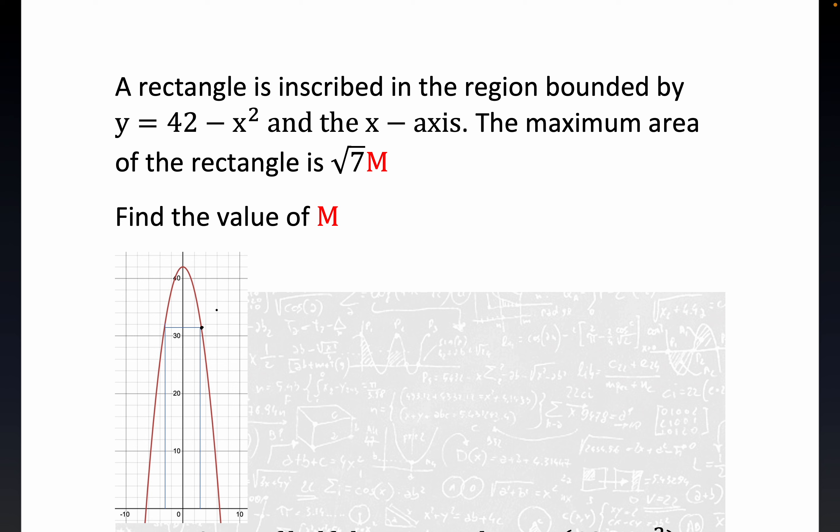Now the coordinates of this particular point, in other words where the rectangle intersects the graph of the parabola, would be x, which corresponds to the width of this particular rectangle. And it has a height equal to the y-coordinate, which is 42 minus x squared in this case.